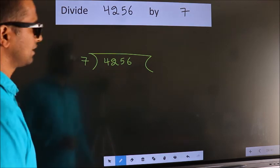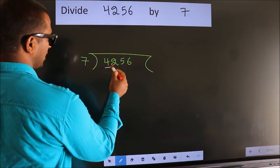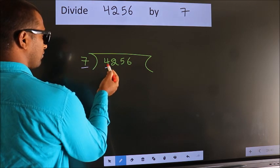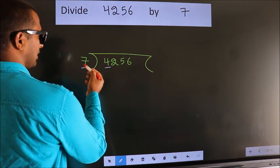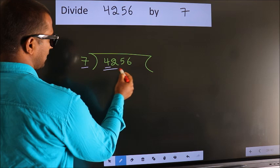Next, here we have 4, here 7. 4 is smaller than 7, so we should take 2 numbers: 42.